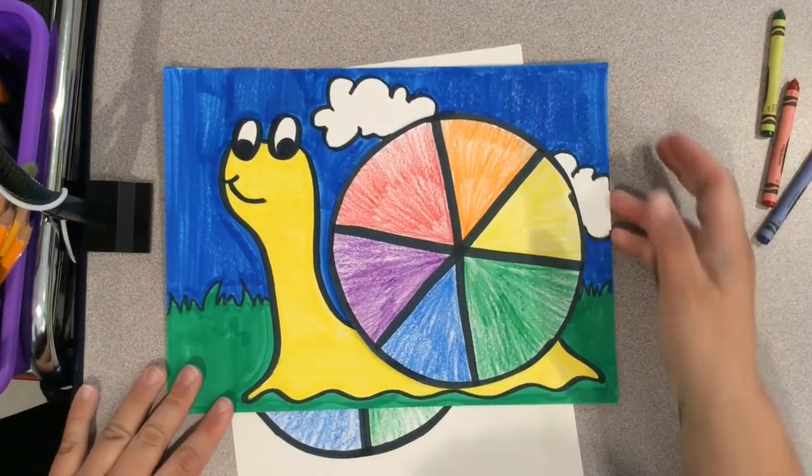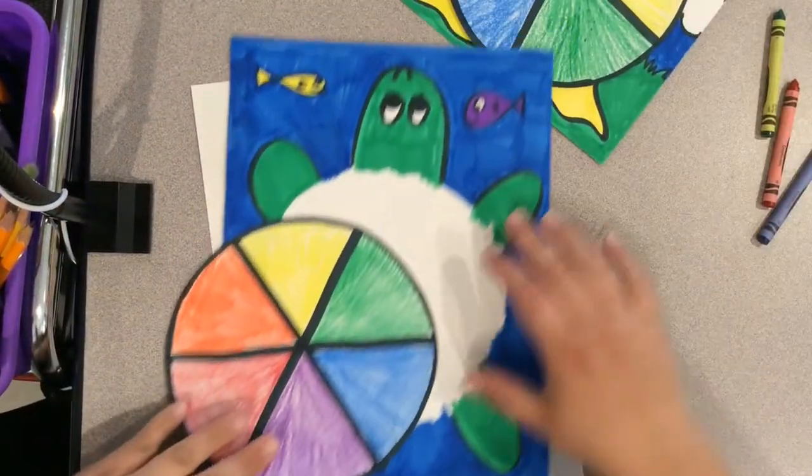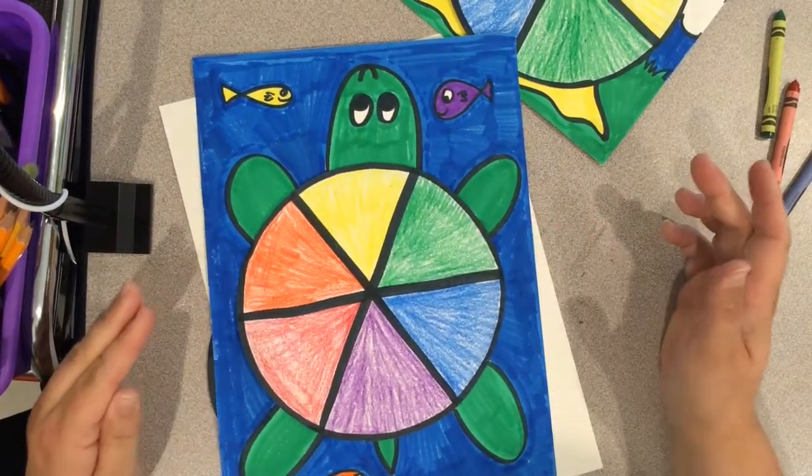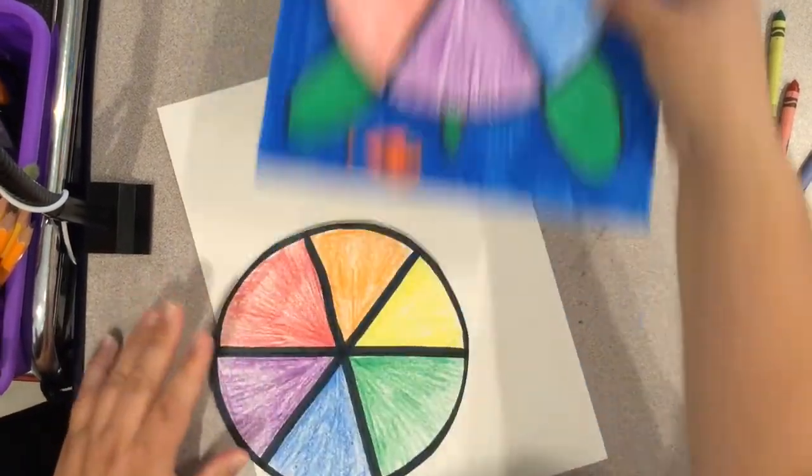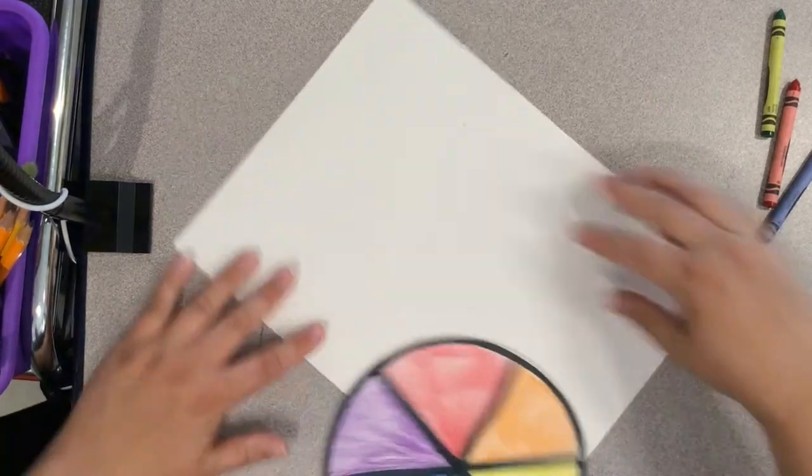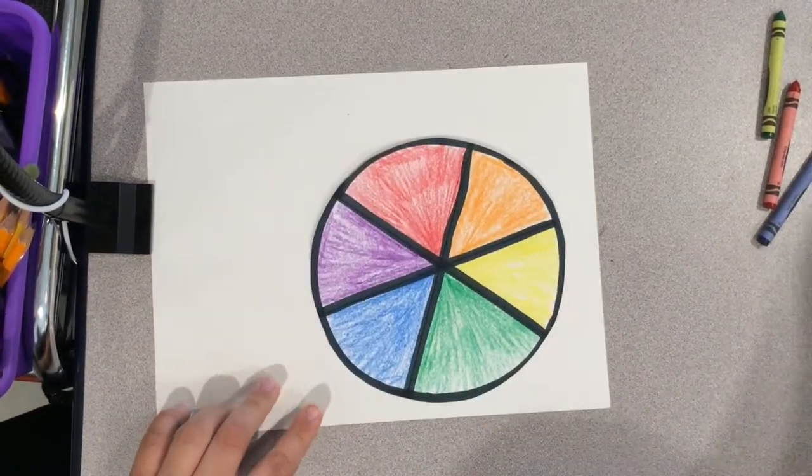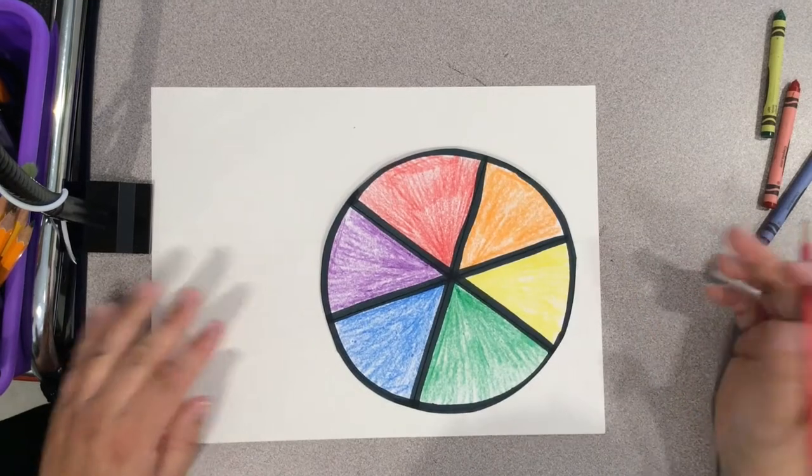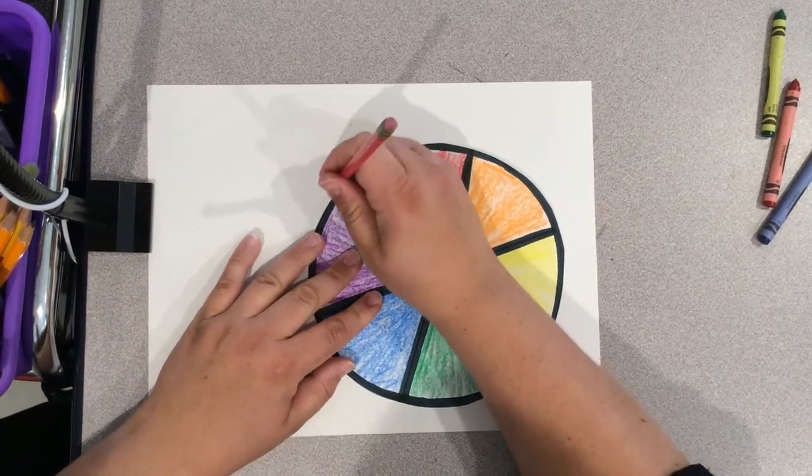Next you're going to decide what kind of an animal you'd like to do. For my examples, I have a turtle and a snail. If you come up with a different animal that has something round on them, some round component that you can use to incorporate your color wheel, go ahead and be creative and come up with something brand new.